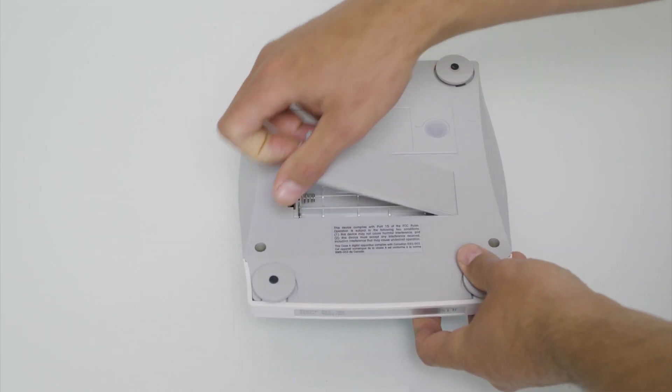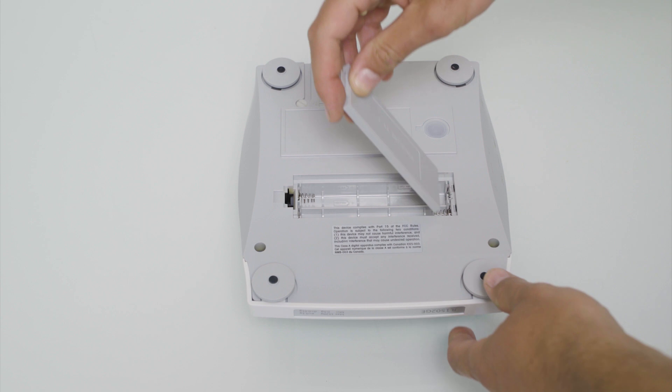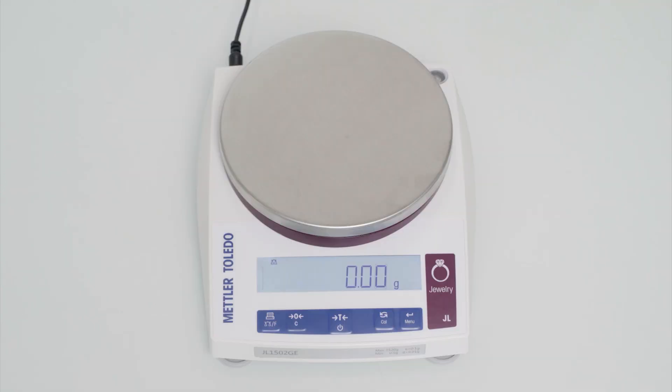JL balances can be run from batteries giving you total flexibility to weigh anywhere you want. Perfect for weighing on the go or for sites where a reliable power supply is not available.